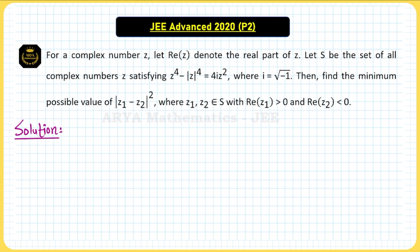For a complex number z, let Re(z) represent the real part of complex number z. S is the set of all complex numbers satisfying the equation z⁴ minus |z|⁴ equals 4i·z², where i is √(−1). We need the minimum possible value of |z1 − z2|², where z1 and z2 are complex numbers satisfying this equation, with the real part of z1 positive and the real part of z2 negative.